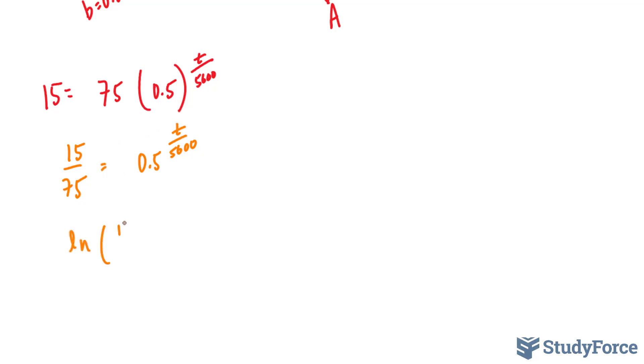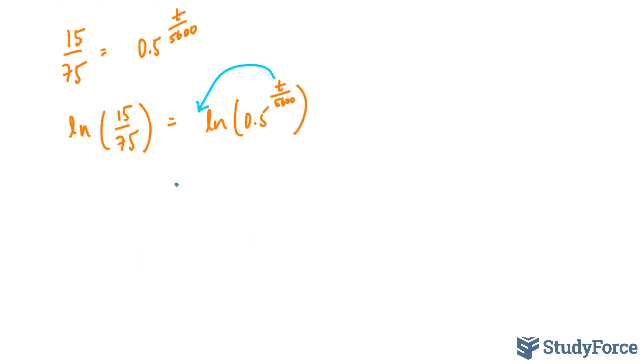ln(15/75) equals ln(0.5^(T/5,600)). The power rule tells us that we can bring this down here, and we end up with (T/5,600) times ln(0.5) equals this left side.